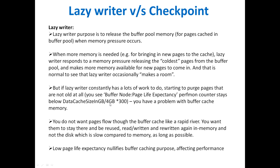If the lazy writer constantly has a lot of work to do — starting to purge pages that are not old at all — you should check the Buffer Node Page Life Expectancy performance counter. If it stays below (data cache size in GB / 4GB) × 300, then you have a problem with buffer cache memory. Low page life expectancy nullifies buffer caching purpose, affecting performance.